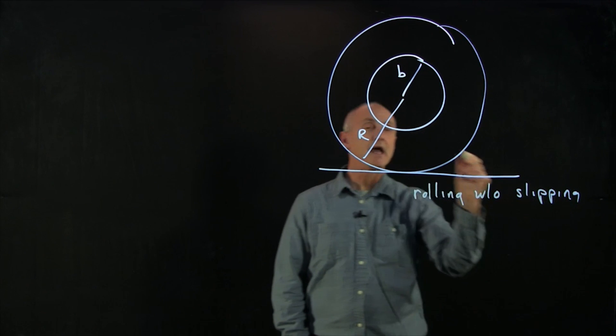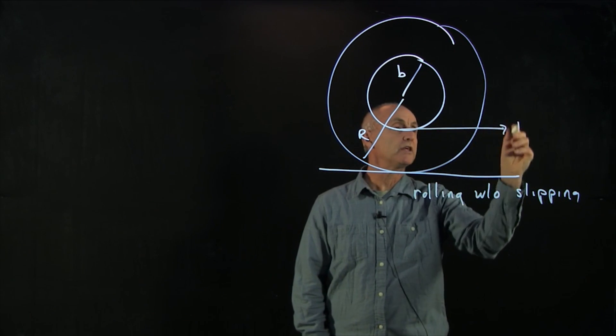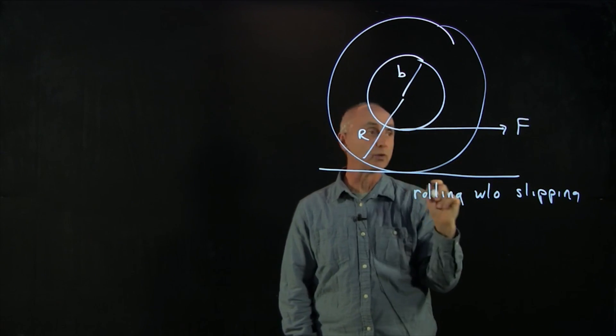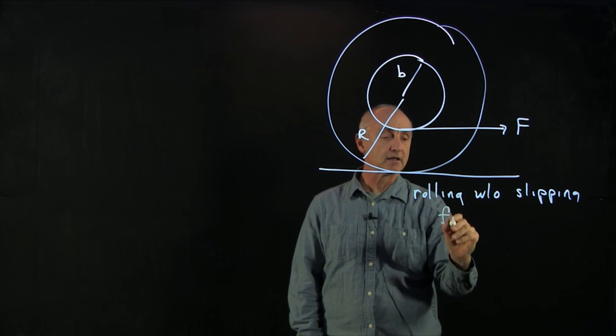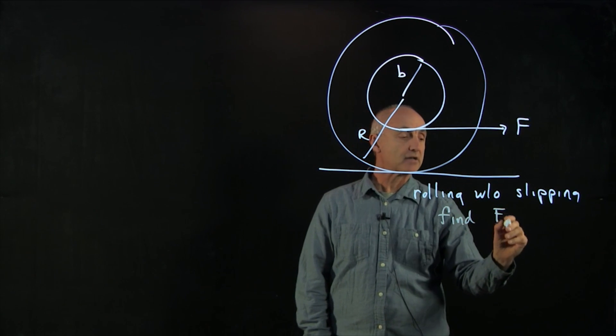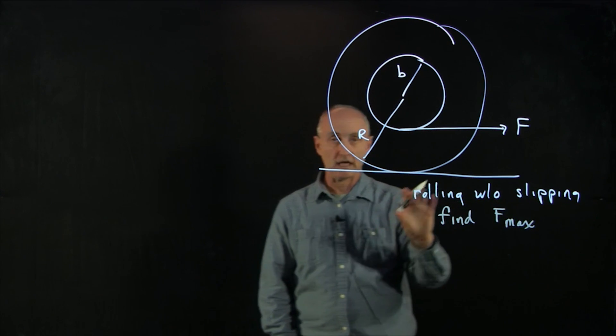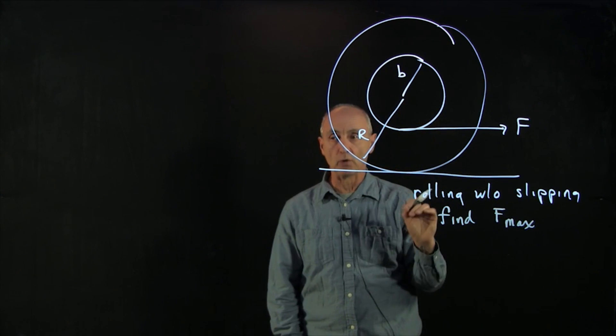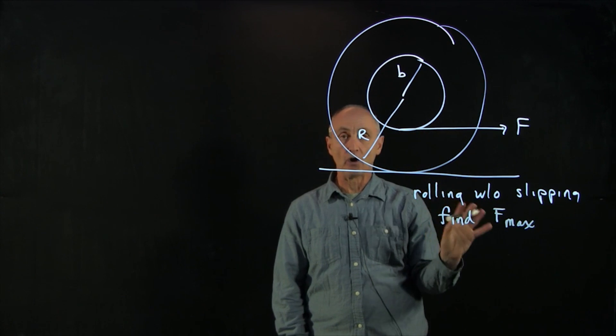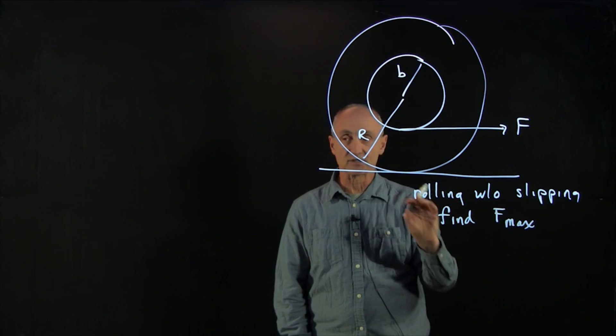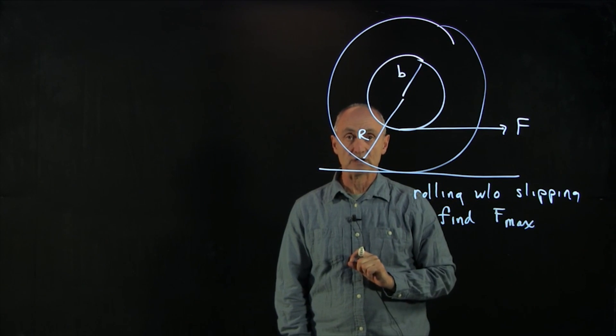And what we have here is we're pulling the yo-yo with a string that's wrapped around the spool. And I want to find f max such that it rolls without slipping. If I don't pull it hard enough, the wheel will roll without slipping. And if I pull it harder than this f max, the wheel will start to slip.